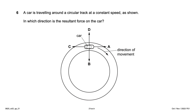A car is traveling around a circular track at a constant speed. In which direction is the resultant force on the car? For an object in circular motion, the force — whether provided by tension in a rope or gravity for a planet — is directed towards the center. So the resultant force is towards the center, option B.